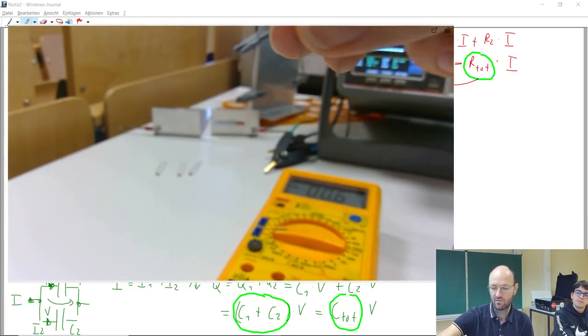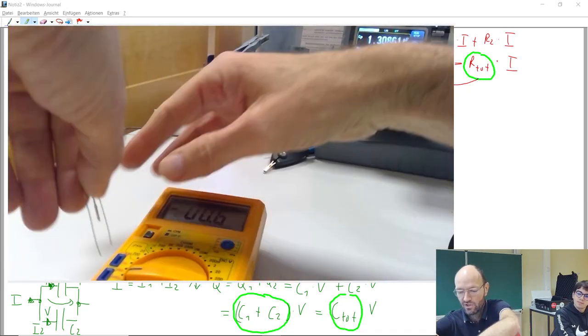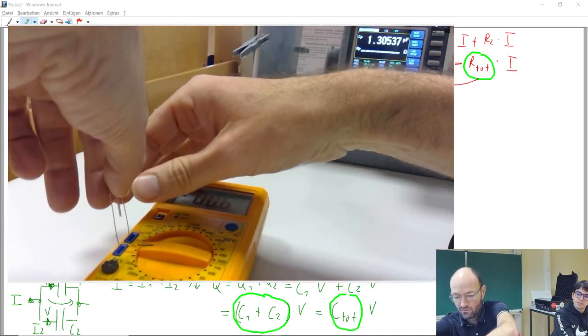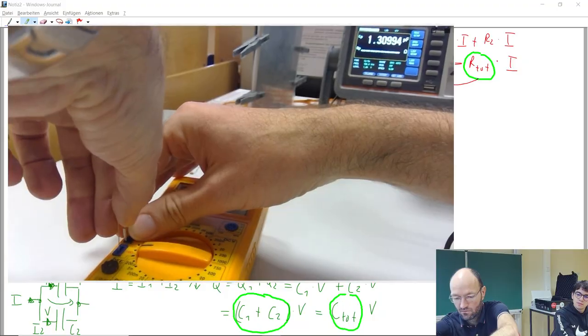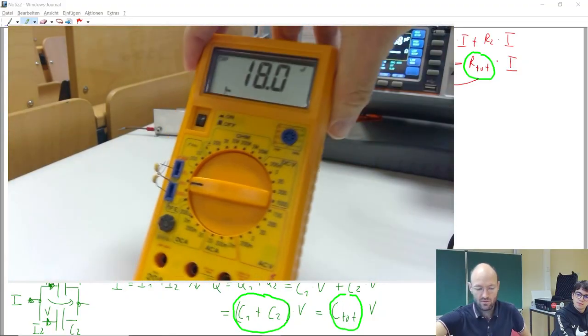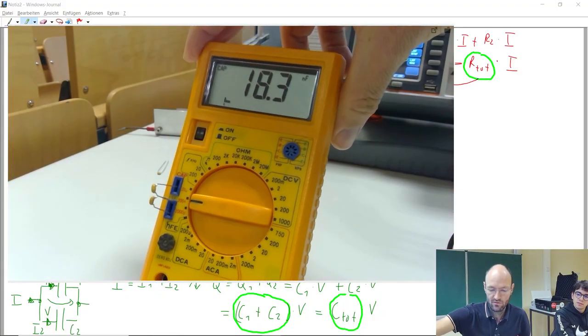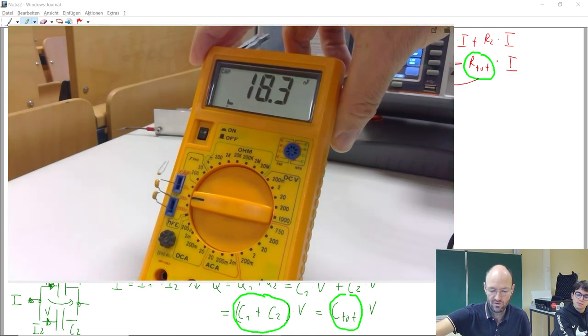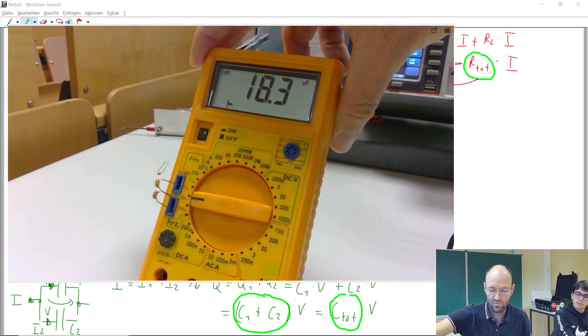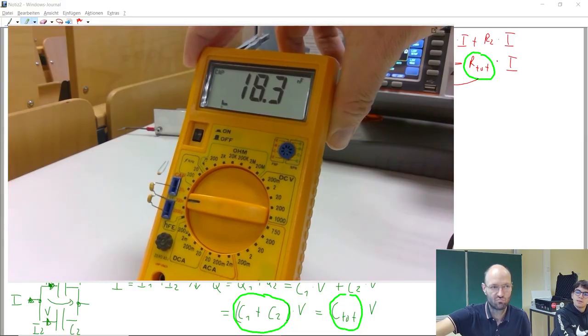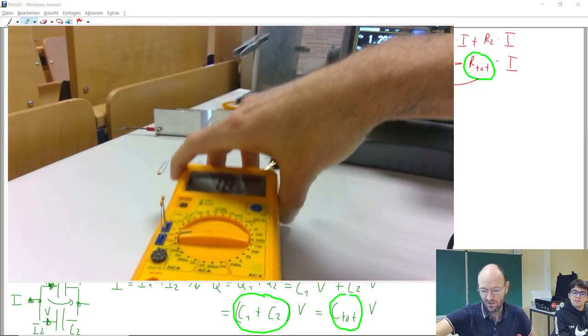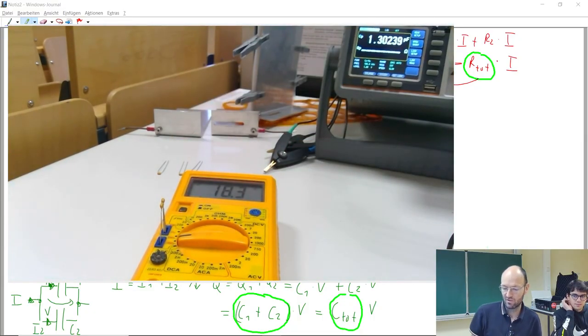20. Half of this. So let's check. If I connect this here and measure again, then we get half of it, approximately 18.3 nanofarad.